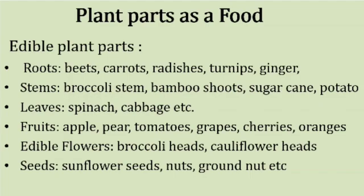Now, as we know that we get most of our food from plants. Various parts of plants give us different types of food. We eat many leafy vegetables, fruits of some plants, sometimes roots, sometimes stem, and even flowers. Examples of edible plant parts: roots — we eat carrots, radishes, turnips, and ginger. Stems — broccoli stem, bamboo shoots, sugarcane, potato. Leaves — spinach, cabbage. Fruits — apple, pear, tomatoes, grapes, cherries, oranges. Edible flowers — broccoli heads, cauliflower heads. Seeds — sunflower seeds, groundnuts.